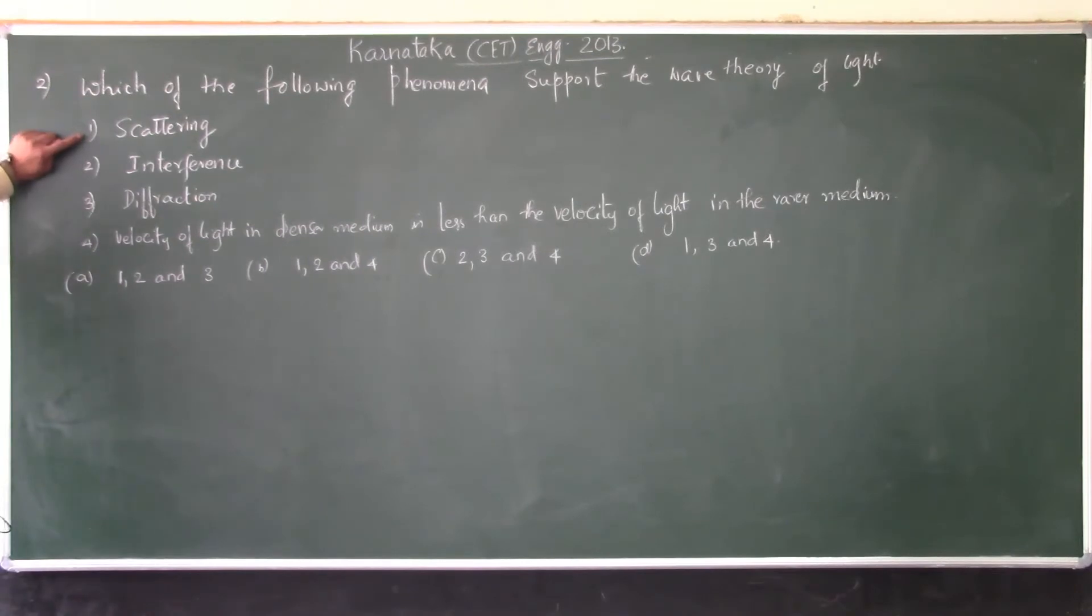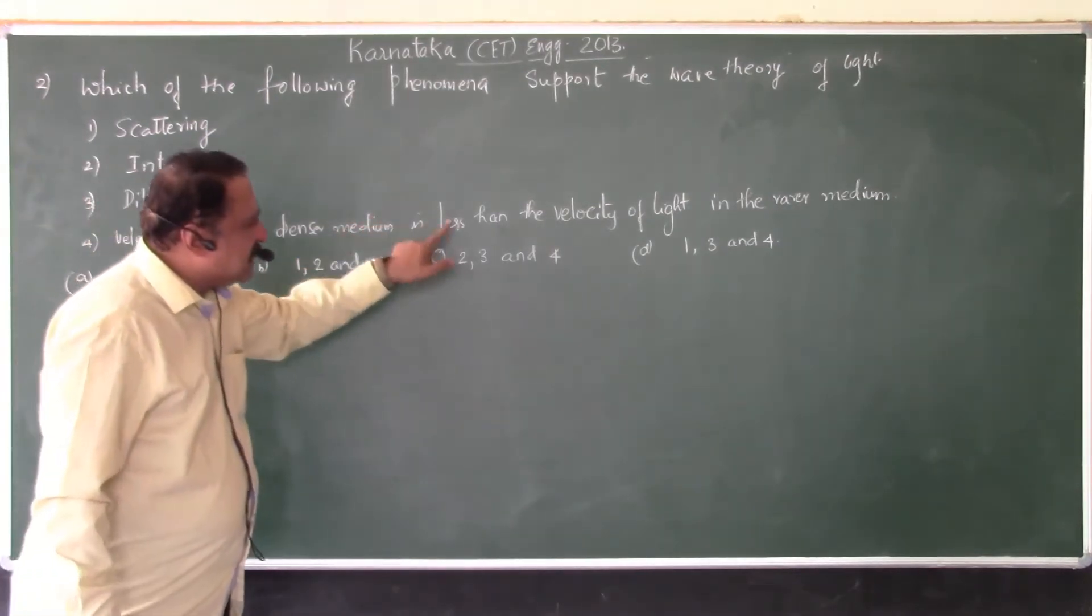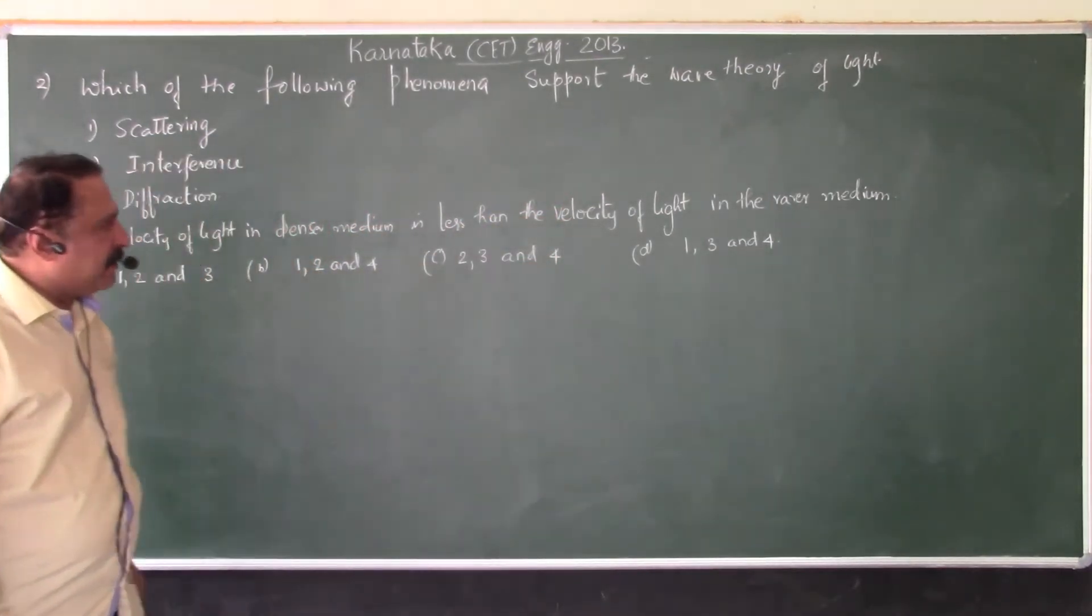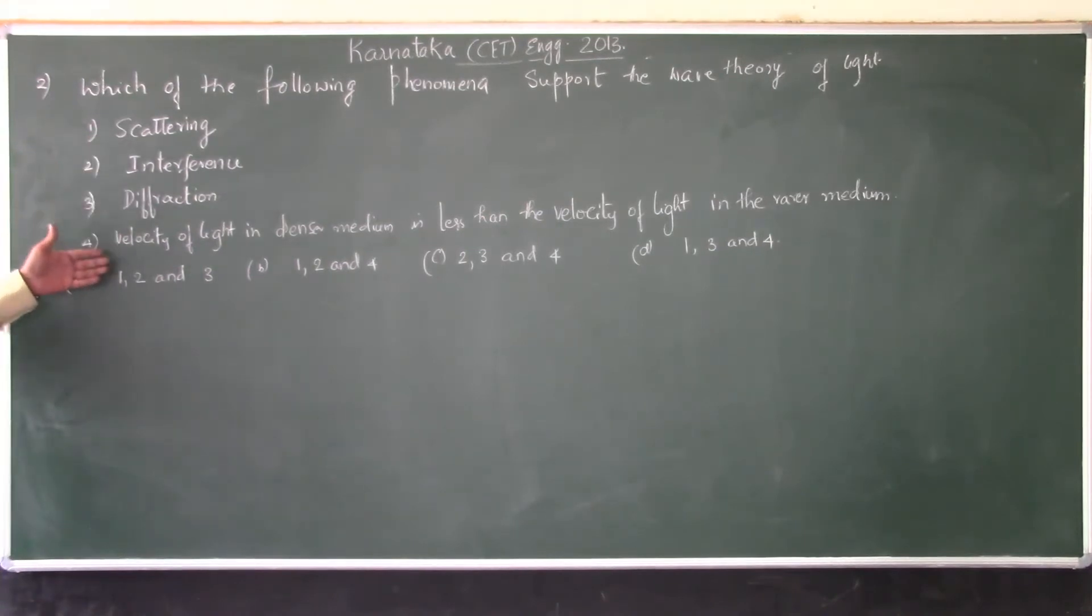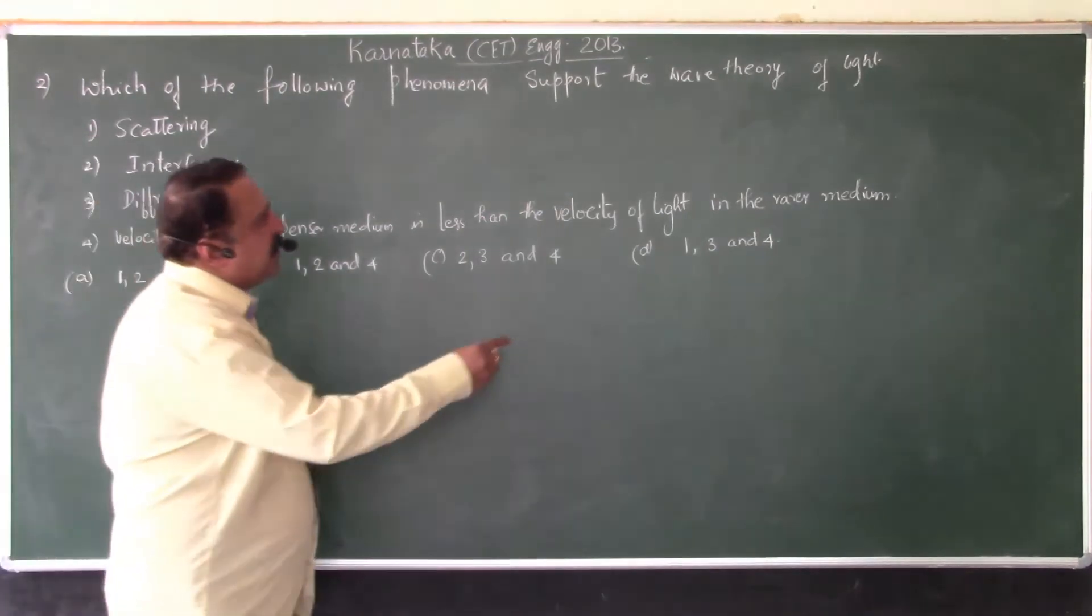If you look into interference, diffraction, and also velocity of light in denser medium is less than the velocity of light in the rarer medium, these three phenomena are purely explained on the basis of wave theory.